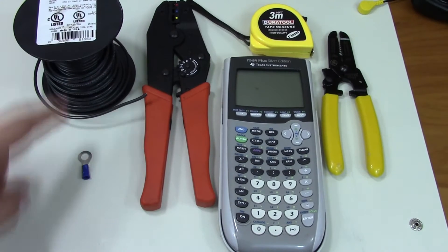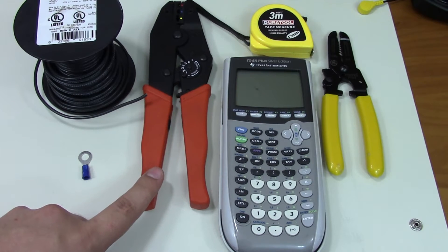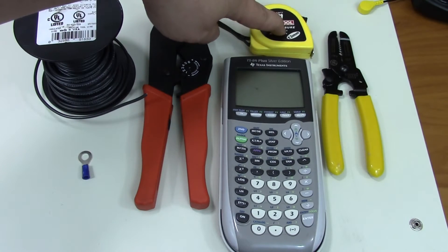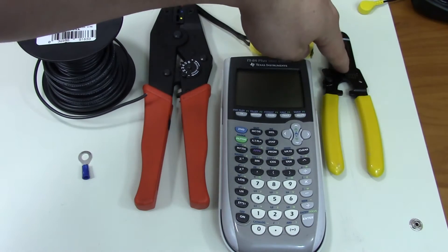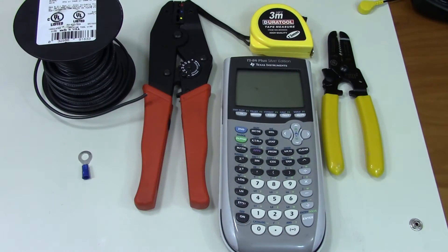You're going to need some wire, a ring terminal, a crimp tool of some sort. It doesn't have to be as fancy as this one, but you're going to need a crimp tool. You're going to need something to measure the wire length, wire strippers and wire cutters, and why you need a calculator I'll explain in a second.